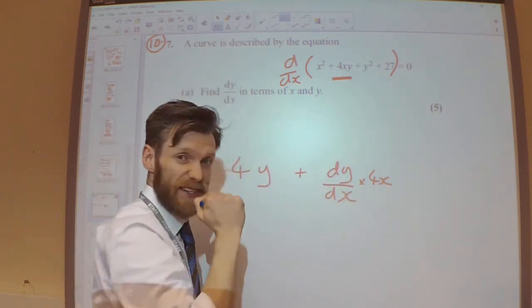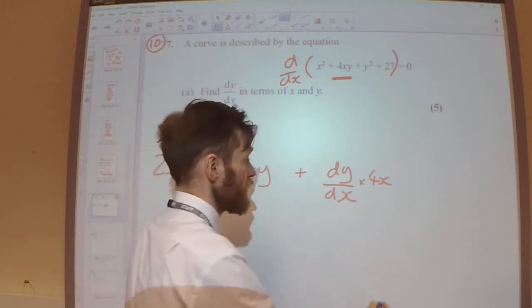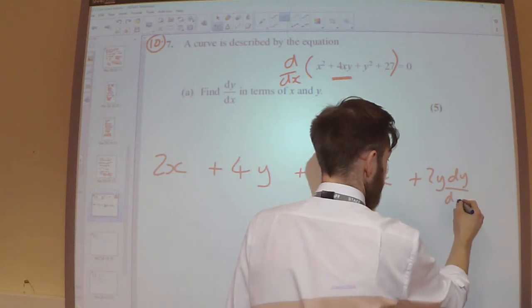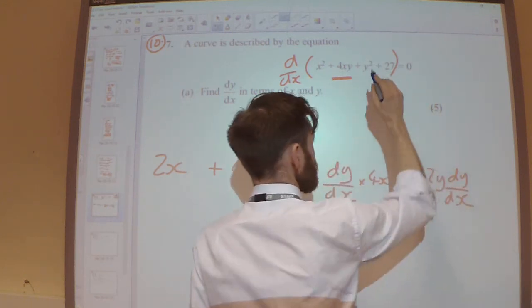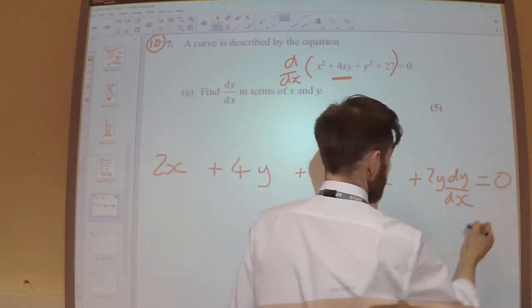Then, differentiating y squared. So differentiating y squared with respect to y gives 2y, but we need to multiply by dy/dx. Differentiating 27 is 0, and the right-hand side is 0.